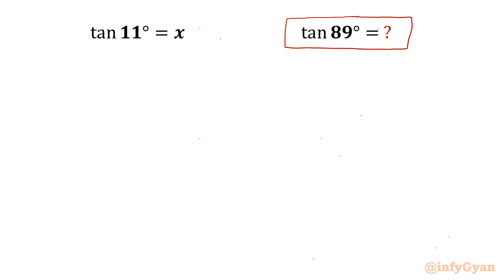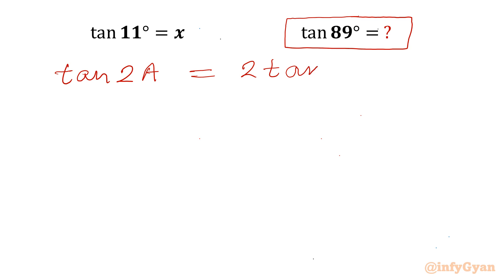Let's get started by writing one powerful trigonometric identity or formula. It is tan 2a equal to 2 tan a divided by 1 minus tan squared a.